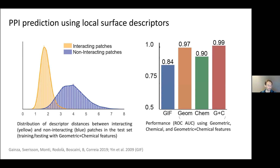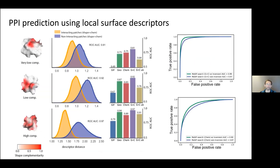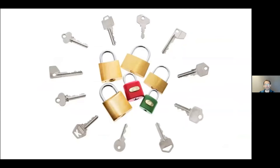Performance in terms of ROC AUC is about 99% — a rather dramatic difference compared to the best non-geometric-deep-learning descriptors. A more detailed analysis splits the dataset into patches with different levels of complementarity. When complementarity is very high the prediction is not surprising, but when complementarity is very low it's a much more difficult problem — and nevertheless we still get about 81% ROC AUC.